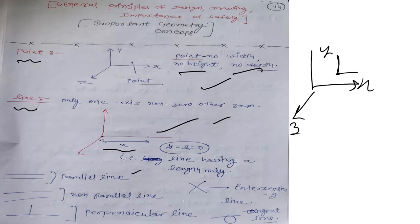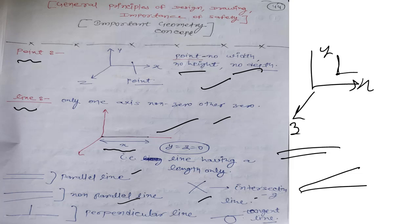Now we will discuss two types of basic lines. Different lines have different methods. This is known as a parallel line. Non-parallel lines — these types of lines are non-parallel. Perpendicular lines — you know, intersecting lines — this type. And this is the tangent line.